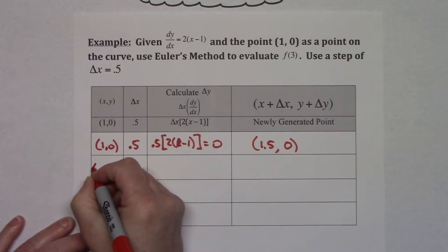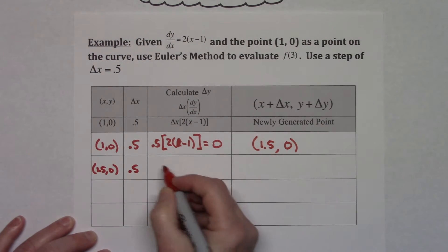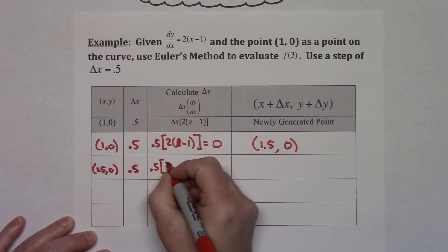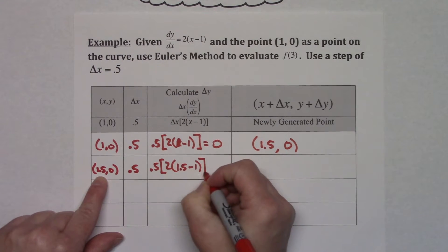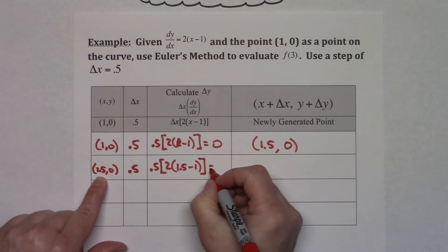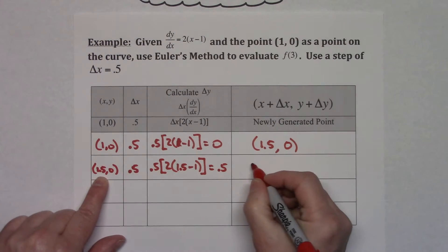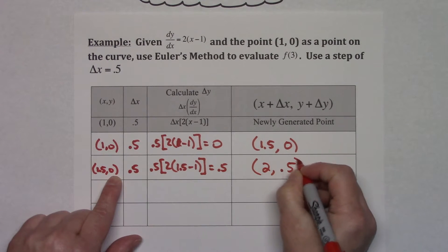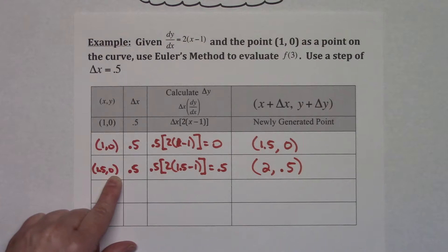I take that new point (1.5, 0) and bring it down. My delta x of 0.5 stays the same. Now I calculate my delta y: 0.5 times 2 times (1.5 minus 1) — doing that math it's going to be about 0.5. So 1.5 plus 0.5 gets me to 2, and 0 plus 0.5 gives me 0.5. My new point is (2, 0.5). I'm going to keep doing this.